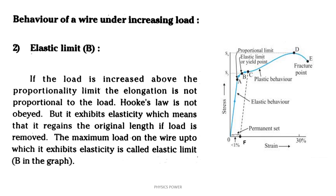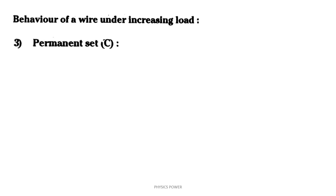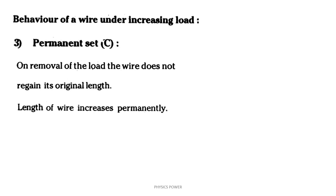If we cross the elastic limit point and increase the load further, we get a permanent set. For example, a one-foot metal scale — apply a little force and release it, and it returns to its original shape. But if you apply force beyond a certain limit, it will deform. That permanent deformation means it will stay in that position even when we remove the force. The original length will not be restored. That fixed length after deformation is called the permanent set.